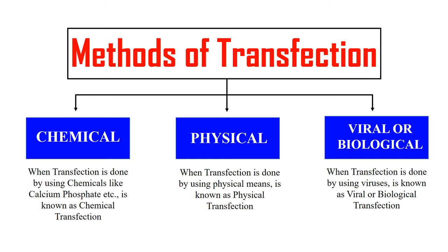The methods of transfection are generally categorized into chemical method, physical method, and viral or biological method. Chemical method is when transfection is done using chemicals like calcium phosphate. Physical transfection uses physical means. When viruses are used for transfection, that is known as viral or biological transfection. Let's discuss these transfection methods one by one in detail.